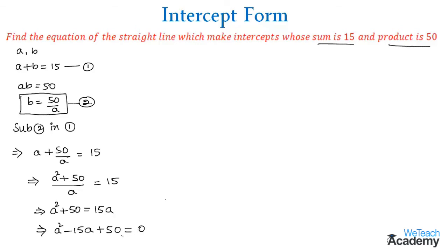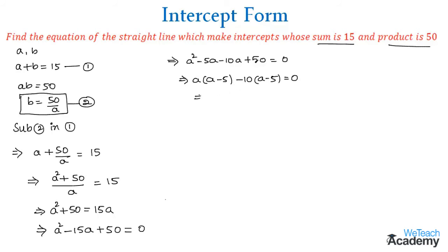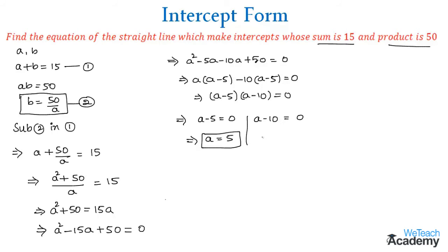Finding the roots of this quadratic equation by factorization: a² - 5a - 10a + 50 = 0, which gives a(a - 5) - 10(a - 5) = 0, so (a - 5)(a - 10) = 0. Therefore a = 5 or a = 10.